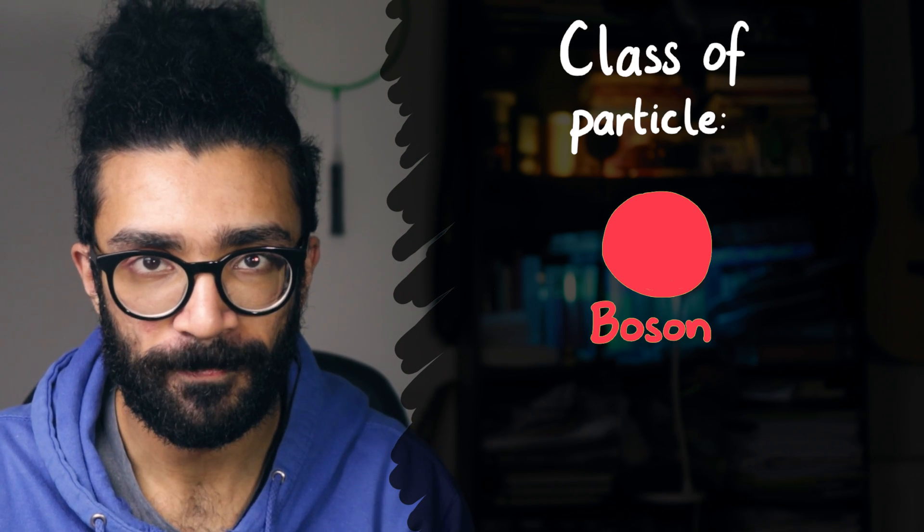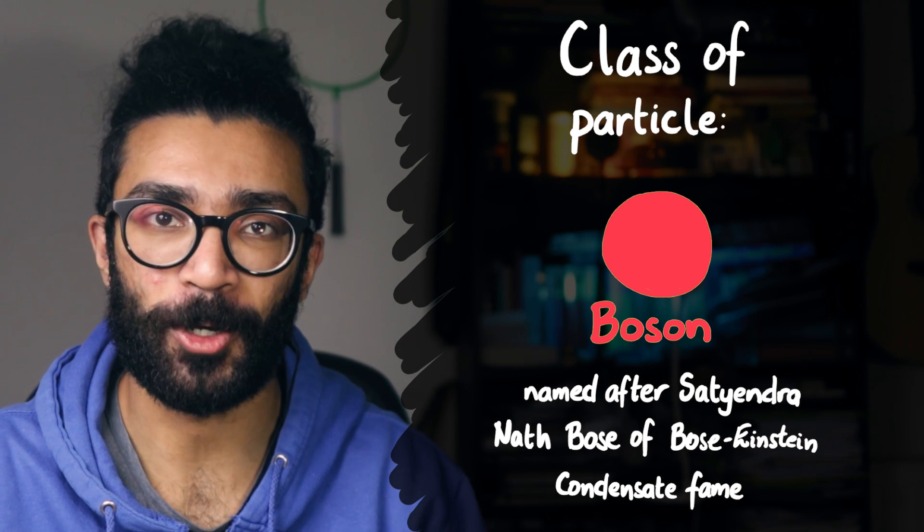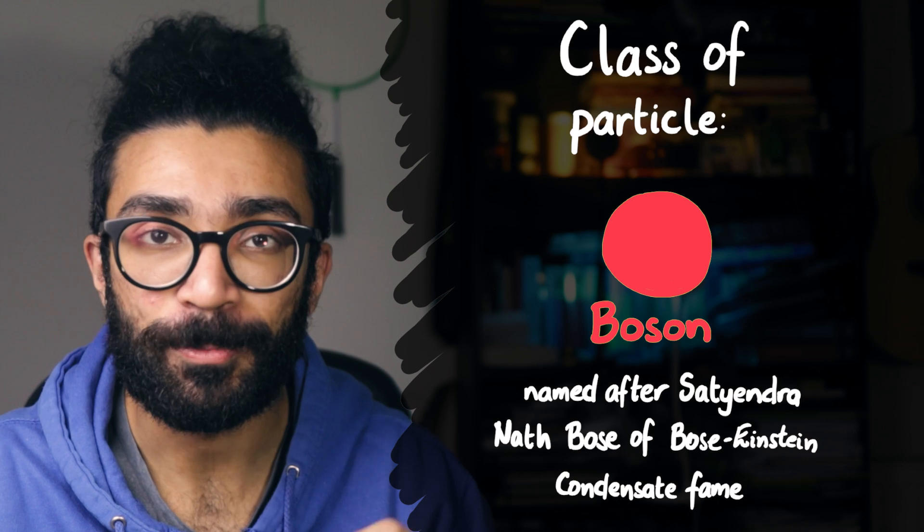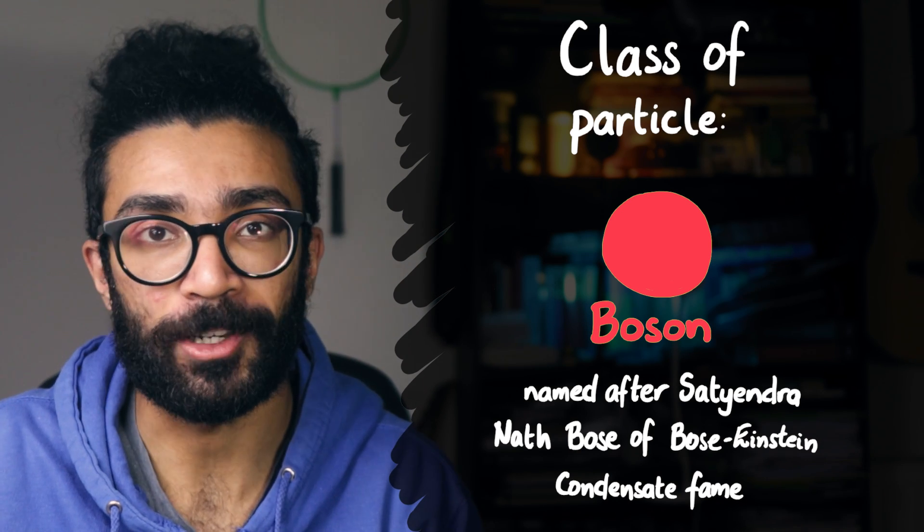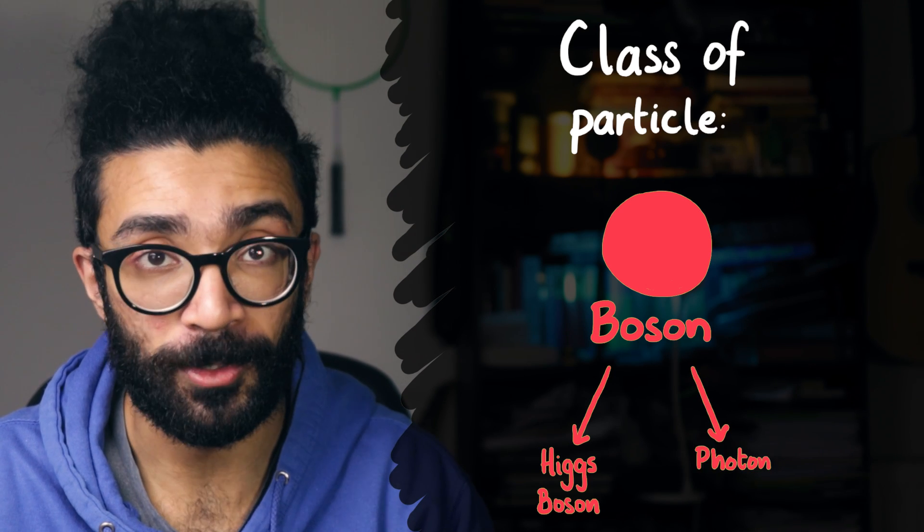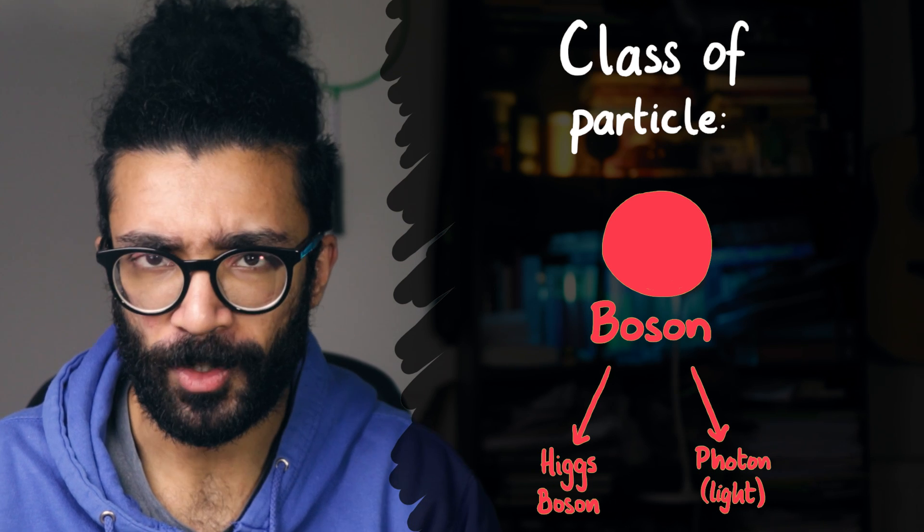So, first things first, we need to have a look at a particular class of particle known as a boson. Named after Satyendra Nath Bose, after which one half of the Bose-Einstein condensate is also named, bosons are a type of particle that have some very specific characteristics that we'll look at shortly. Examples of bosons include the very famous Higgs boson, which you may have heard of, it was discovered a few years ago now, and photons as well. Photons are particles of light. So, what's so important about bosons?